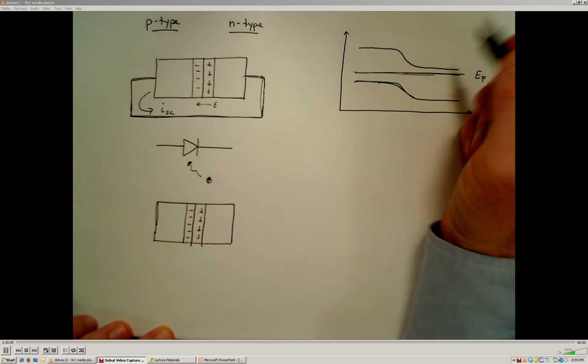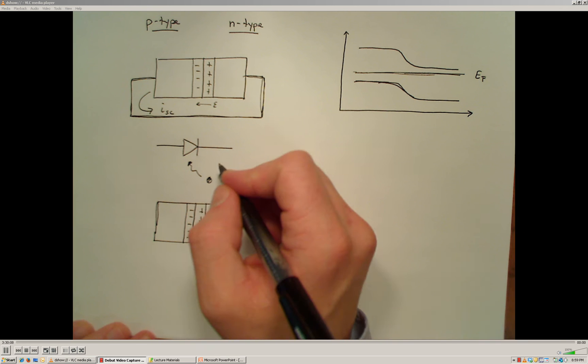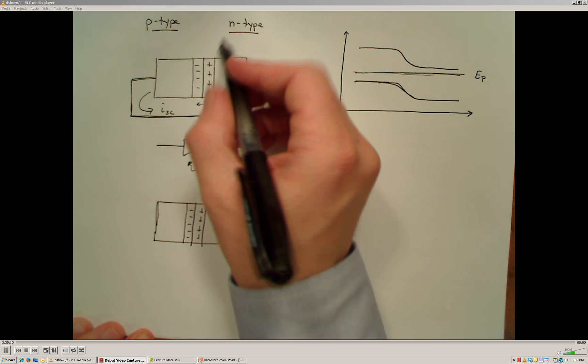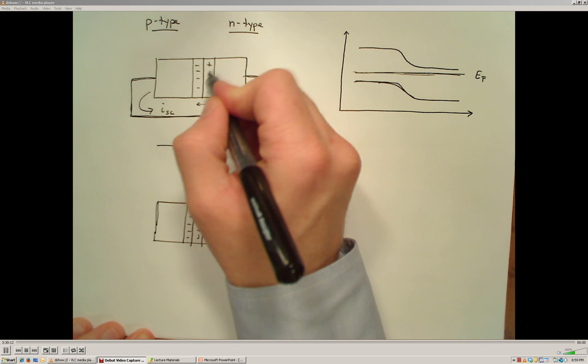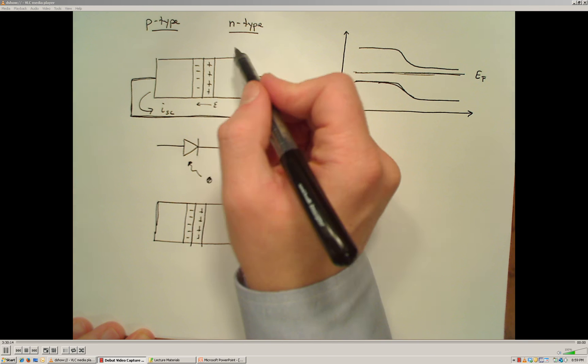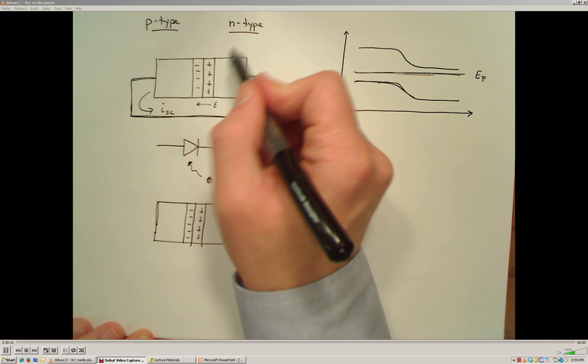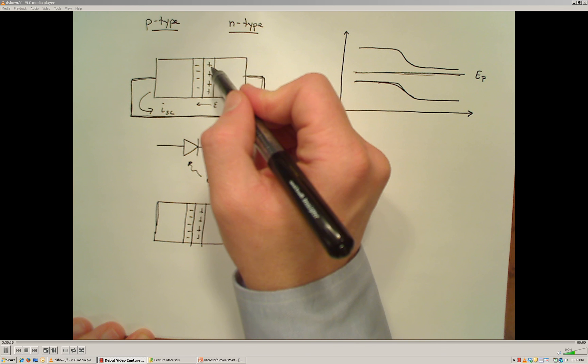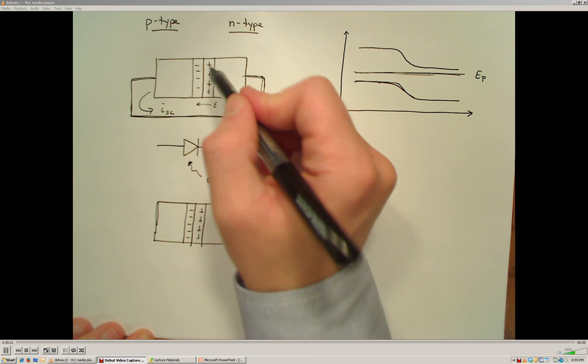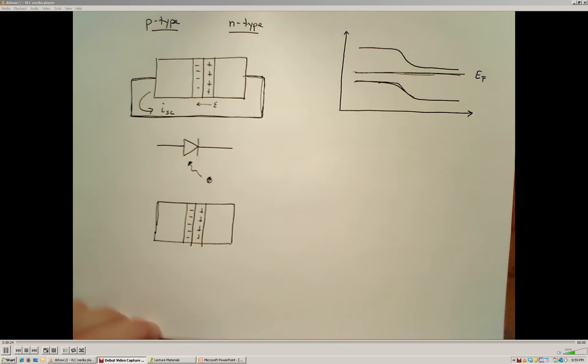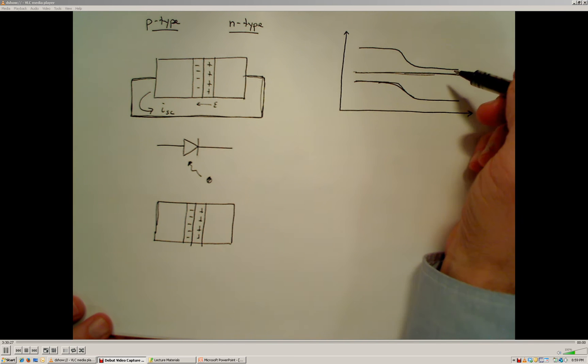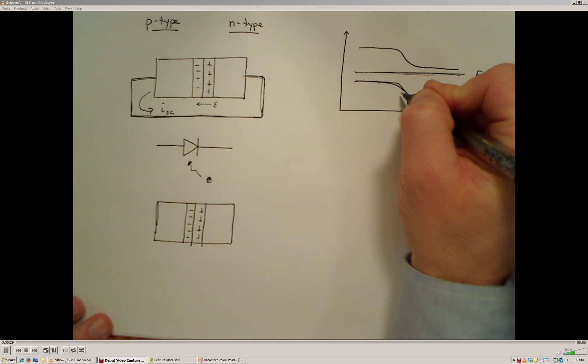Now, the thing that's different about a photodiode, or a solar cell, is that when a photon of light with enough energy, with a sufficient wavelength of energy, a low enough wavelength of light, or sufficient energy of the photon comes into this material, what can happen is that it can have enough energy to knock an electron out of the valence band and into the conduction band.